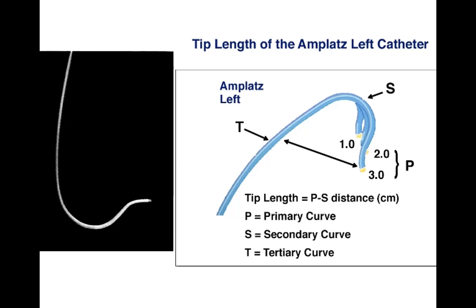M-Plex Left has a duck shape. For M-Plex Left 1, the '1' corresponds to 1 centimeter between this bend and this bend. You can imagine M-Plex Left 2, M-Plex Left 3 — the difference is the length of that arm. What's characteristic of M-Plex Left is that it's a duck shape and it has a very wide secondary curve, regardless of 1, 2, or 3. That secondary curve is the same in all of them — it's a big secondary curve, kind of the butt of the catheter.